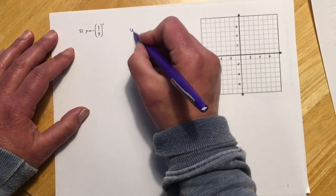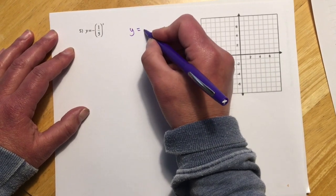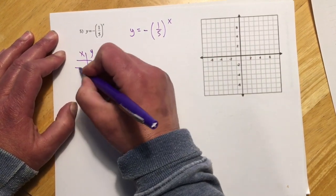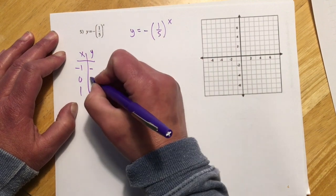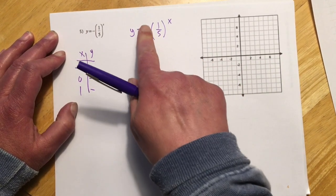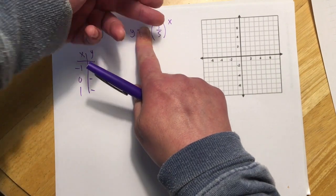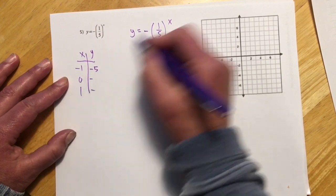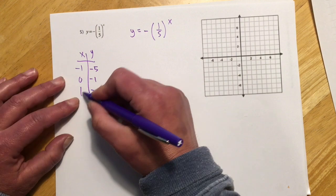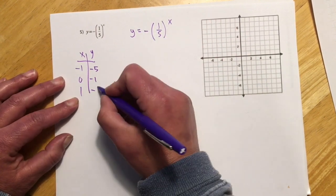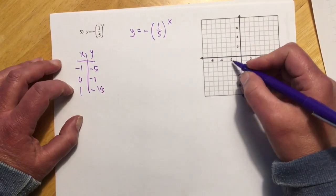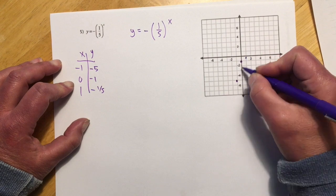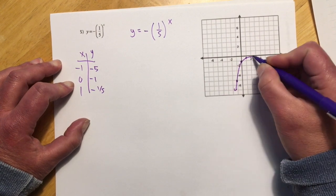For y equals negative (1/5) to the x: x y, negative 1, 0, 1. All values are negative because of the negative sign in front. 1 fifth to the negative 1 — flip it over — becomes 5, but negative. To the 0, this would be 1 but negative. To the 1, this would be 1 fifth but negative. So when x is negative 1, y is negative 5; at 0, y is negative 1; and at 1, y is negative 1 fifth.